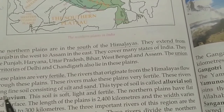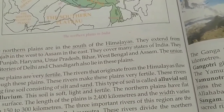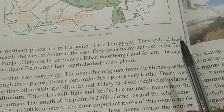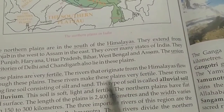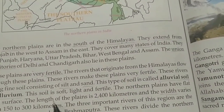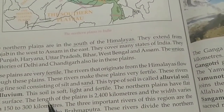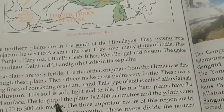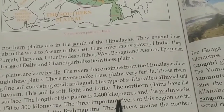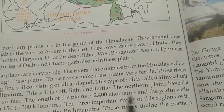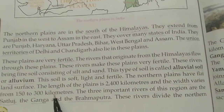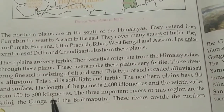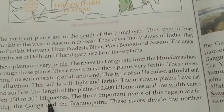Like in Haryana, it is a plain land — it is a flat land. The length is 2400 km and the width is between 150 to 300 km. So it is a plain land surface.